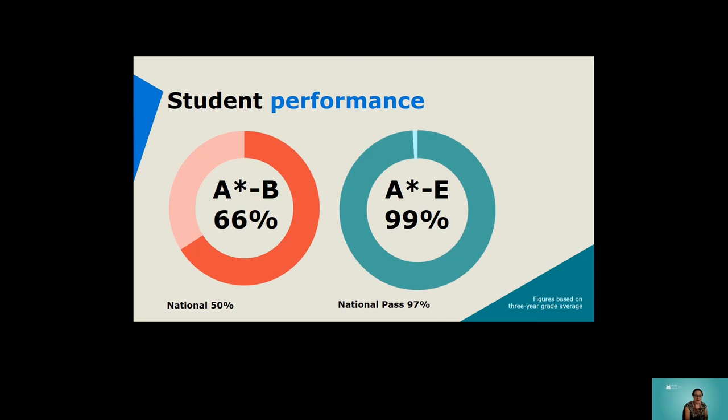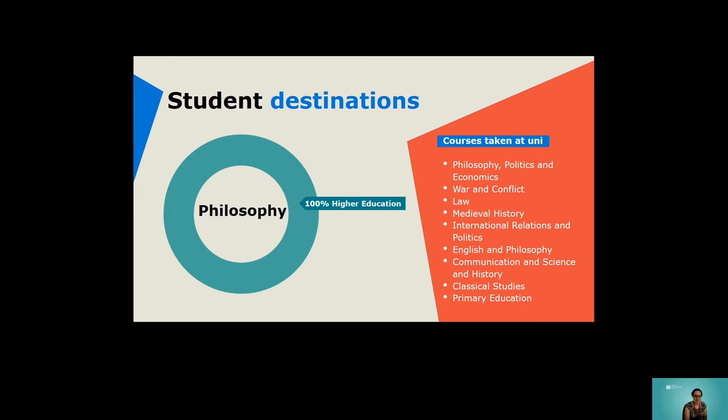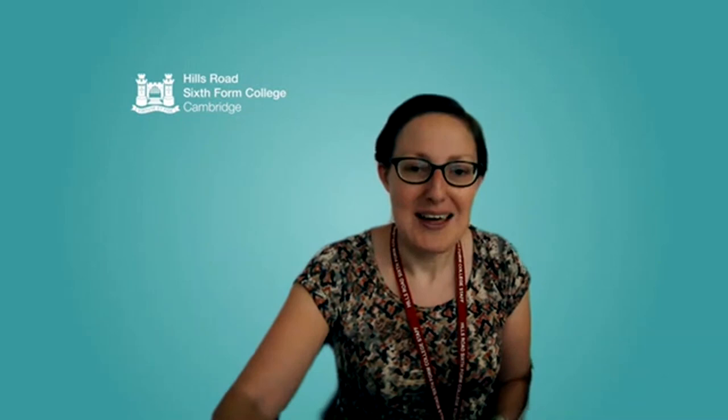Our students perform really strongly in philosophy, as you can see here, with the vast majority of students achieving a B grade or above. Here are some more examples of the courses that our recent students have gone on to study. You can see lots of these related to philosophy, but lots of them less so. We have some students who come back and tell us about how the study of philosophy at A-level has really helped and supported and given them the skills to do well in their maths or science or technology related degrees as well.